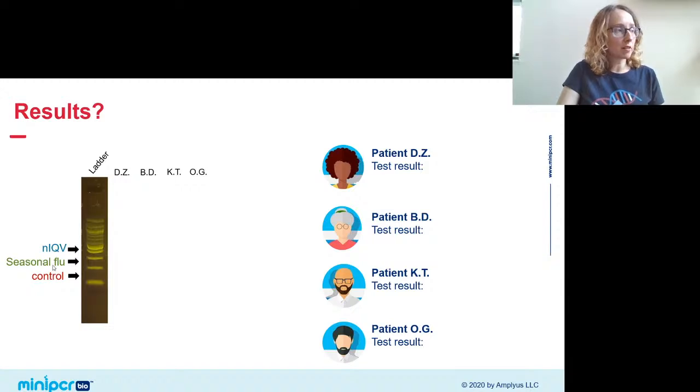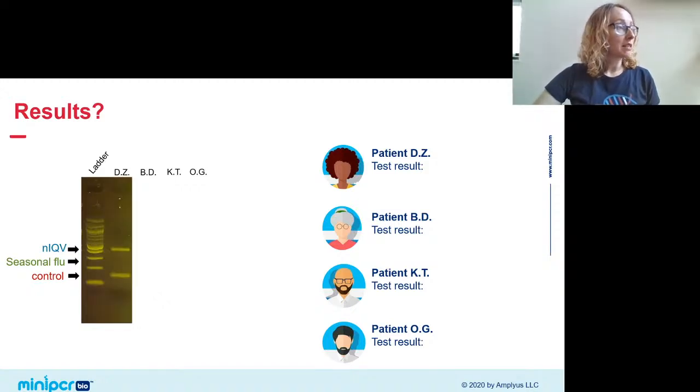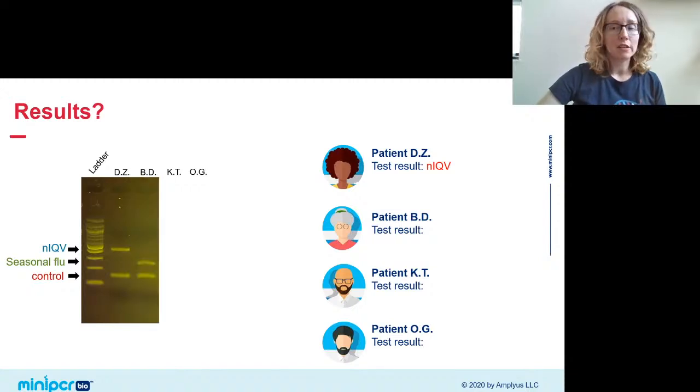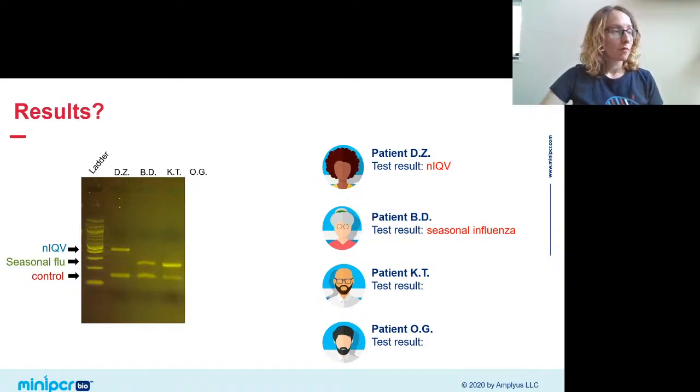So here's our ladder. Here's a reminder of which bands we expect to see where, depending on what our patients test for, let's look at our first patient, patient DZ. It's patient DZ. We see two bands in her lane. We see our control band, which is good. That means our experiment worked. We can trust our result. And we see a band here at about the 400 base pair mark. And again, that is where we expect to see a band if someone is infected with NICV. So this looks like a positive result for NICV. Yikes, for patient DZ. Patient BD is our second patient. Patient BD, again, we see our control band, good. We also see a band at the 250 base pair mark, which would indicate that BD is positive for seasonal flu. Patient KT, their results look the same as BD. We, again, see a 250 base pair band and our control band is present. Again, this is a positive for seasonal flu. And then our patient OG, we don't see either of our virus bands, but we do see our control band. So that would indicate our experiment's working fine. This patient genuinely tested negative for both NICV and for seasonal flu.